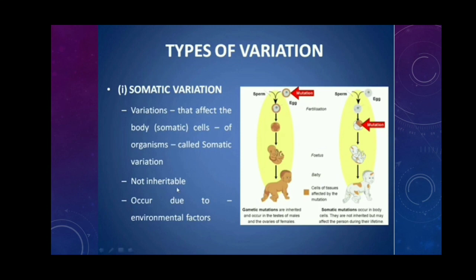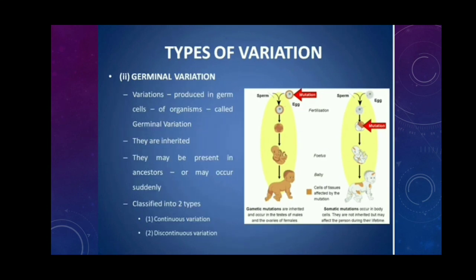Another type is germinal variation. Germinal variation is produced in germ cells, that is, gametes. It is inheritable. They may be present in ancestors or may occur suddenly. These germinal variations are classified into two types: continuous variation and discontinuous variation.